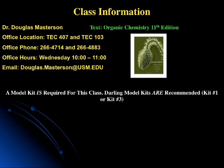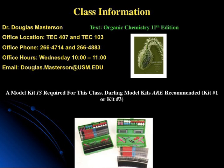A model kit is required for the class. If you haven't gotten one, you can get them over in the bookstore — they come in a cardboard case. It's the exact same kit in a plastic case if you Google Darling Model Kits at darlingmodels.com, around $20–$25. You're going to be in this class for two semesters, so you want it to last. If you're a chemistry or polymer major, you'll likely need it for higher-level courses, so it's a good investment.